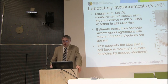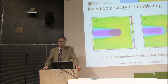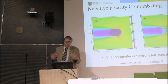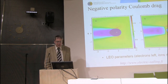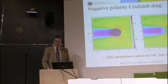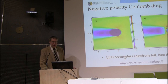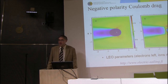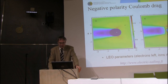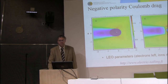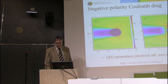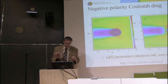Now for the negative polarity Coulomb-drag effect. This particle simulation uses low-Earth orbit parameters. The electron distribution and ion distribution are shown — ions are oxygen ions in this case. Because the tether is now negatively charged, it repels electrons, creating an electron void — a blue region completely void of electrons — as they don't have enough energy to penetrate into this region.